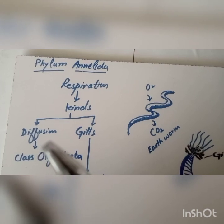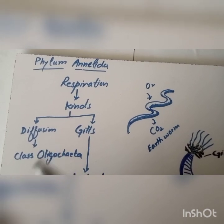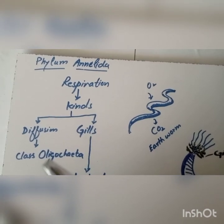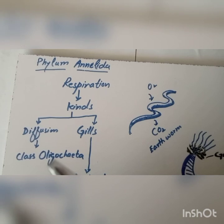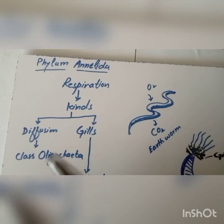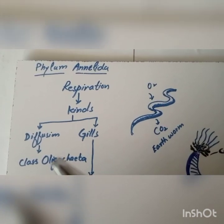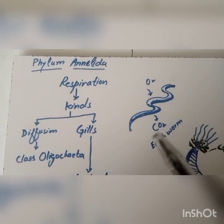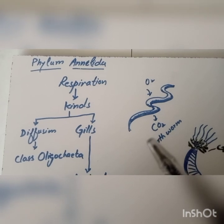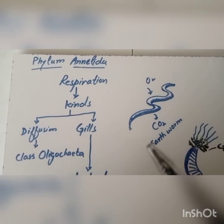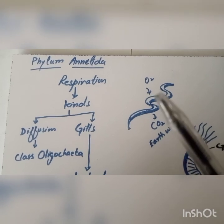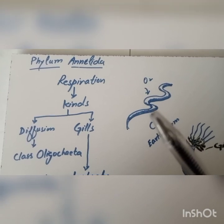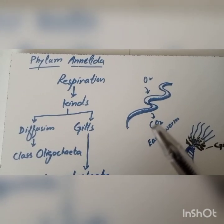Diffusion is found in the class Oligochaeta, where they use their outer skin to exchange gases. As you can look here, there is the example of Oligochaeta or earthworm, where the intake of oxygen and elimination of carbon dioxide takes place.